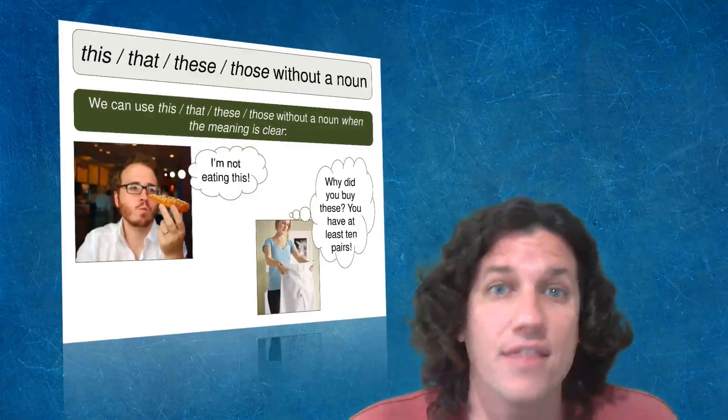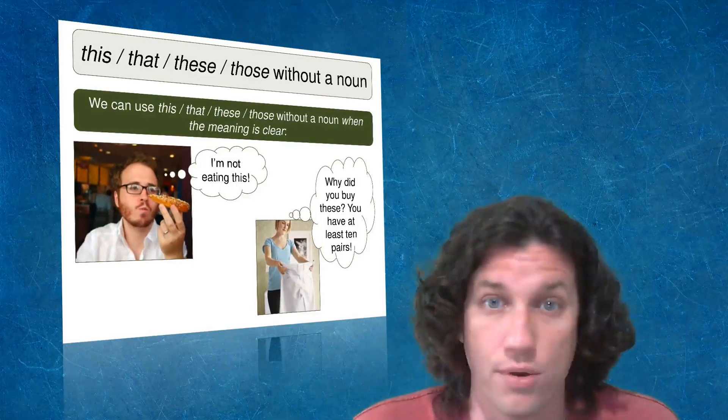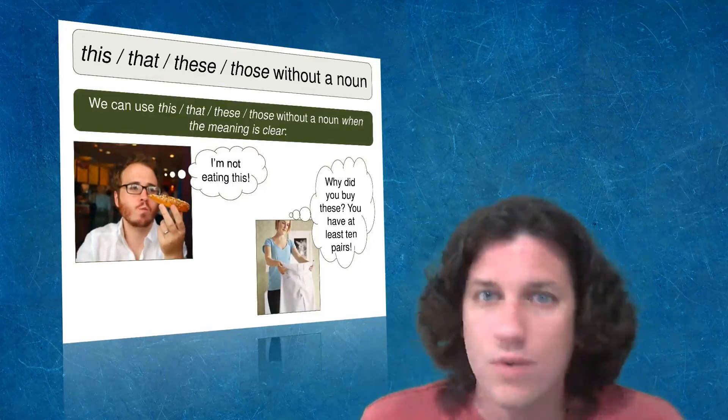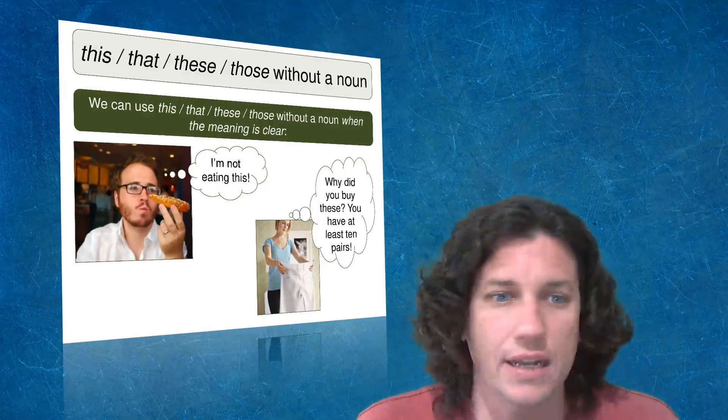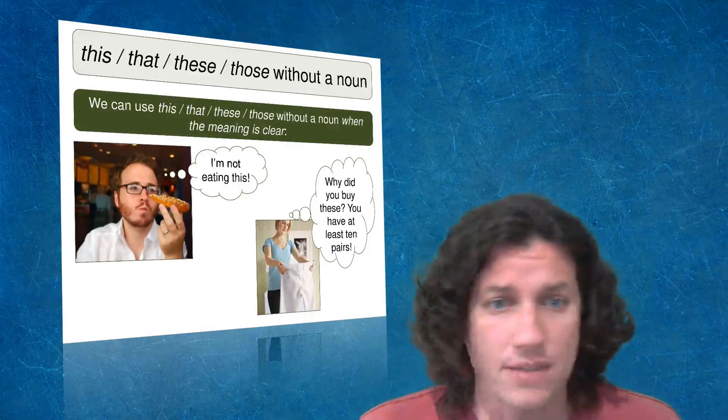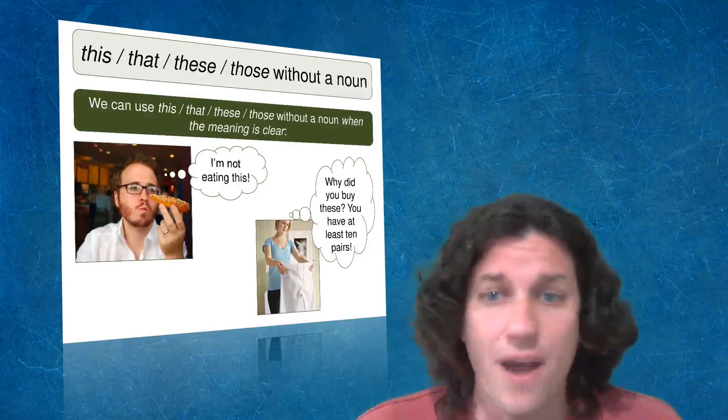So after you go over this with them, then the next thing to talk about is using this, that, these, and those without a noun. So you can see here on the slide that when the meaning is clear, we don't need a noun. So this guy eating the breadstick looking at it says, I'm not eating this, or the girl looking at the pants, Why did you buy these? You have at least 10 pairs.